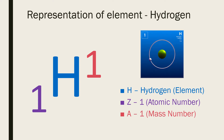The value of Z, atomic number 1, is written on the left-hand bottom corner of the symbol H, and the value of A, the mass number 1, is written on the right-hand top corner.